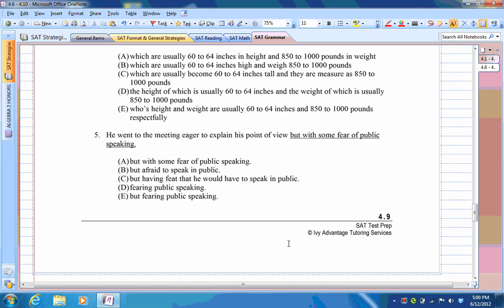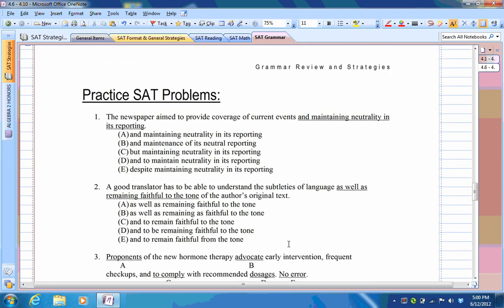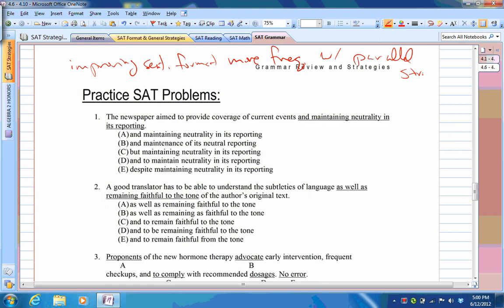So if we look at the problems on page 4.9, you could see these in both improving sentences and identifying error format, but you probably see these more often in improving sentences formats. So we look at number one. The newspaper aimed to provide coverage of current events and maintaining the travel environment. So you see how D works well for us there. A good translator has to be able to understand the subtleties of language, as well as remaining faithful to a tone. So to be able to understand and to remain faithful. So go C on that one.